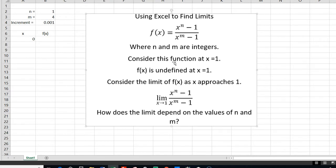Now let's first consider this function at x equal 1. When x is 1, no matter what n or m are, it's 1 minus 1, which is 0, over 1 minus 1, which is 0. So it's undefined, 0 over 0. It's called an undefined function.